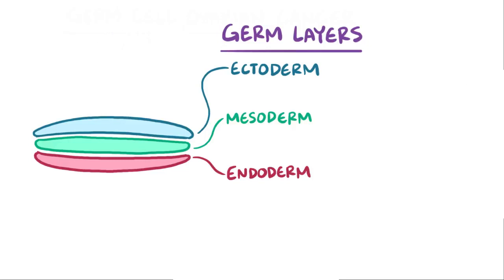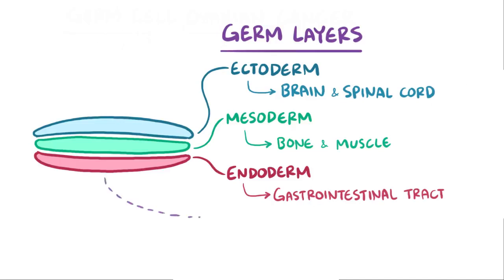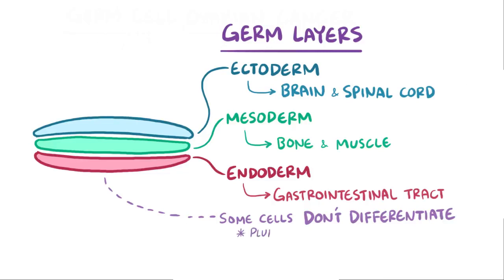For example, some ectodermal germ cells become cells of the brain and spinal cord, some mesodermal cells form bone and muscle, and some endodermal cells become cells in the gastrointestinal tract. Some very special germ cells, though, stay as germ cells — meaning that unlike cells that differentiate, these germ cells retain their ability to turn into other cell types. They're like ancient little shapeshifters.